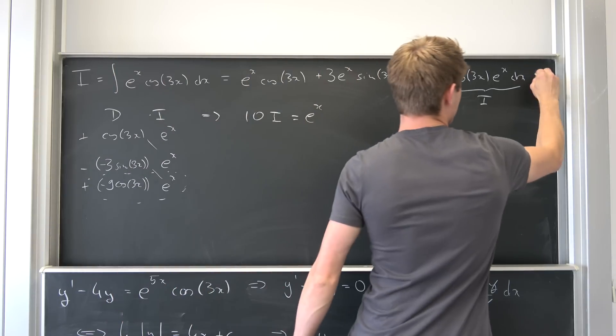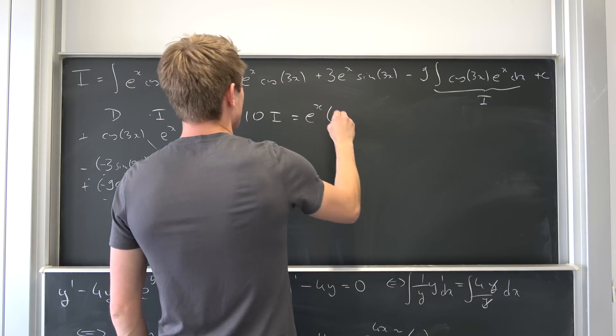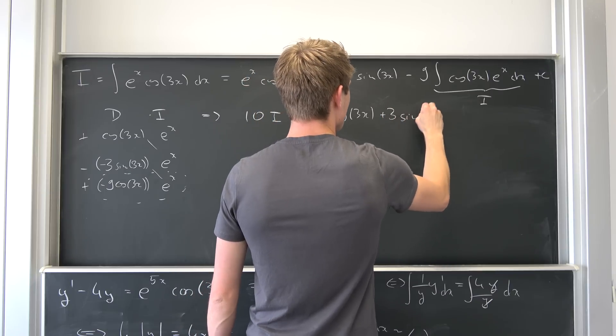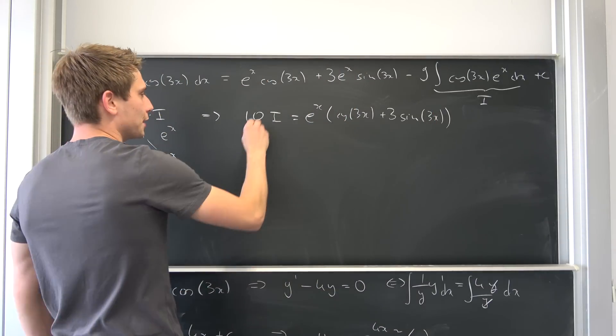And don't forget your arbitrary constant c in the end. It's an indefinite integral. I'm sorry. E to the x cosine of three times x plus three times sine of three times x and now we can divide both sides by 10.